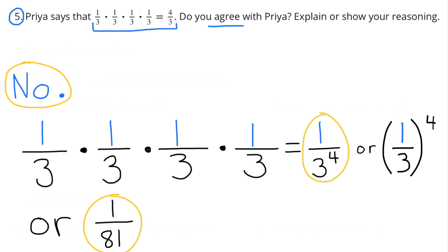or 1 third all to the fourth power, or 1 over 81, since 3 to the fourth power is 81.